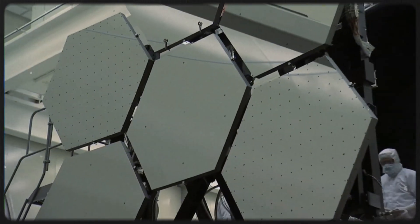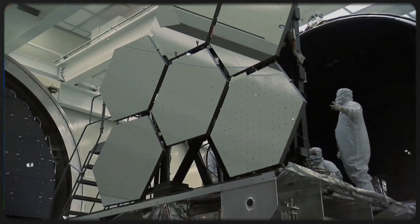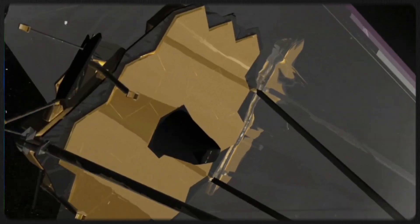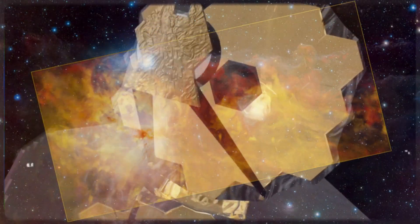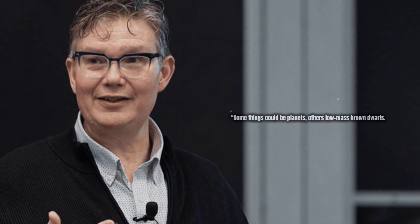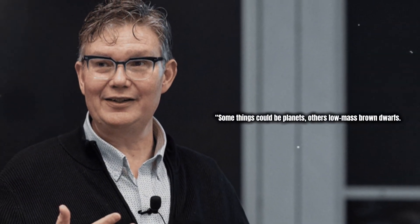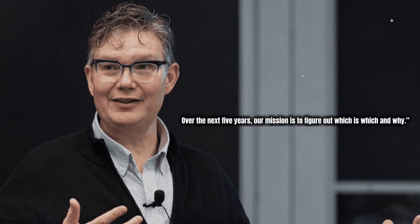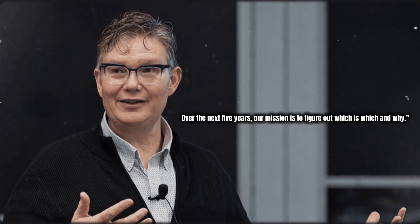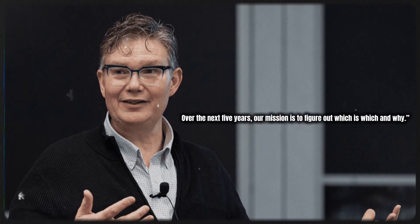Right now, the team is using Webb's spectroscopic instruments to continue scanning deep into the Flame Nebula. They're analyzing objects hidden within that dusty cocoon. Some of them might be planets, others extremely low-mass brown dwarfs. And as astronomer Michael Meyer noted, the lines between the two can be blurry. Some things could be planets, others low-mass brown dwarfs. Over the next five years, our mission is to figure out which is which.